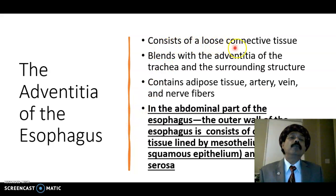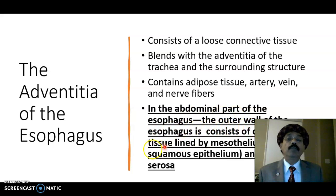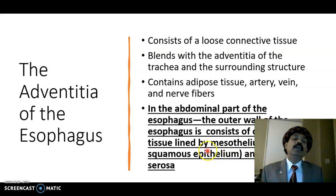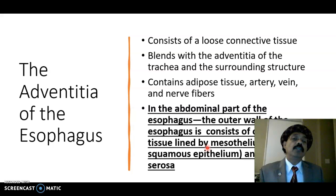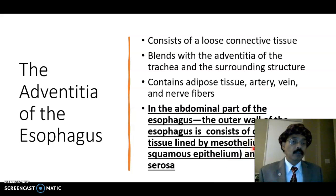The adventitia consists of loose connective tissue that blends with the adventitia of the trachea and surrounding structures, and contains adipose tissue, arteries, veins, and nerve fibers. The abdominal part of the esophagus — where the vagus nerve is present — is lined by connective tissue covered by mesothelium, which is simple squamous epithelium, and is called the serosa. The esophagus extends from the laryngopharynx to the cardiac end of the stomach; the abdominal portion is about 1 to 2.5 cm, and in that area the outer wall is lined by serosa — visceral peritoneum.